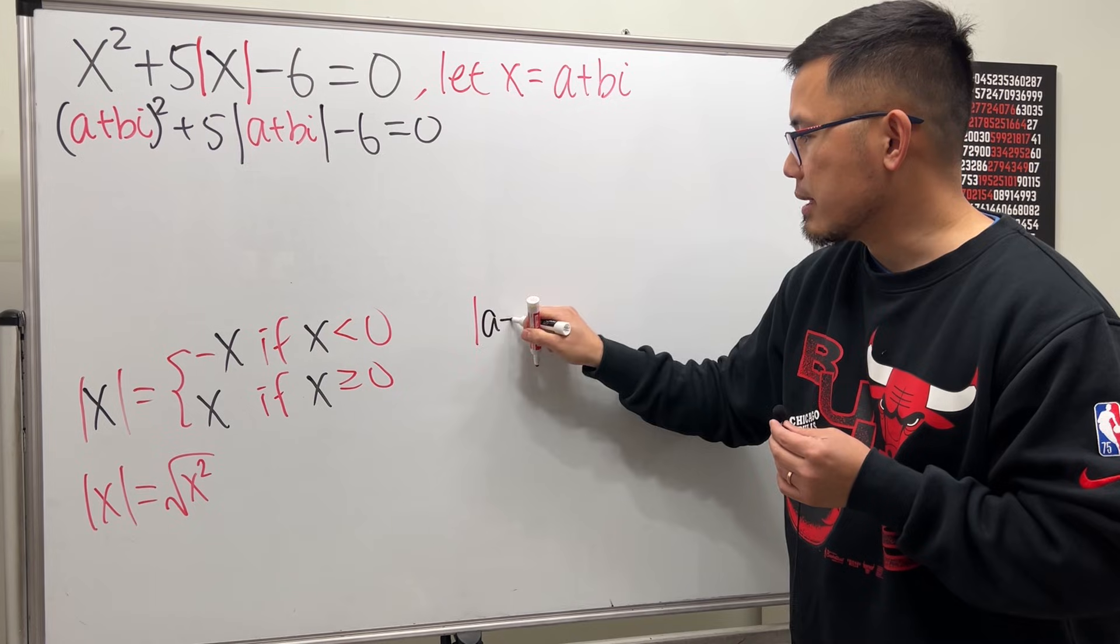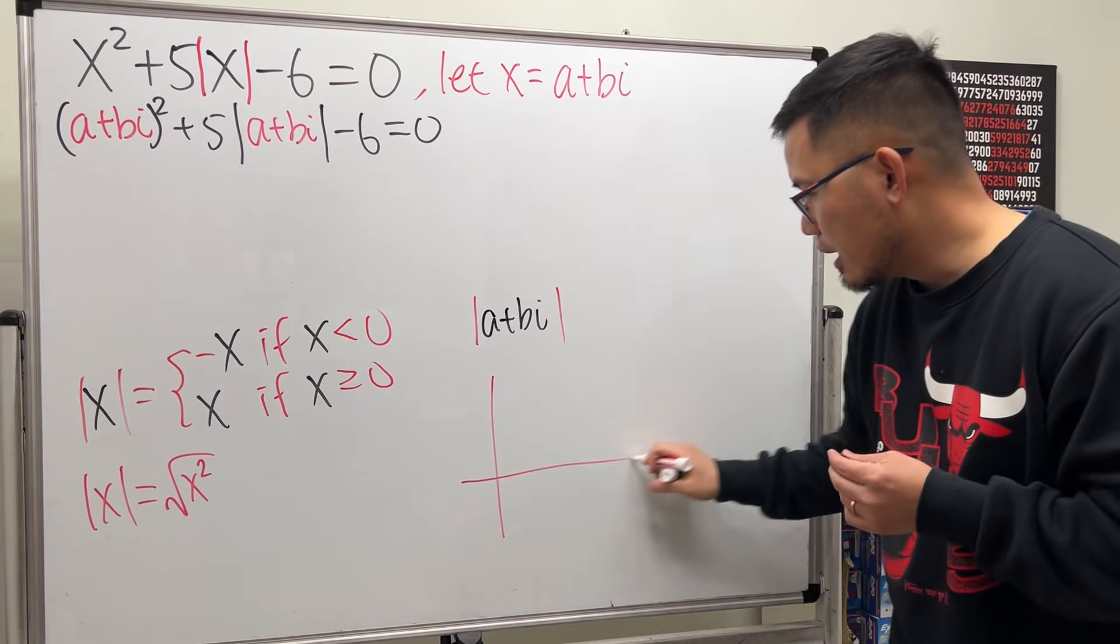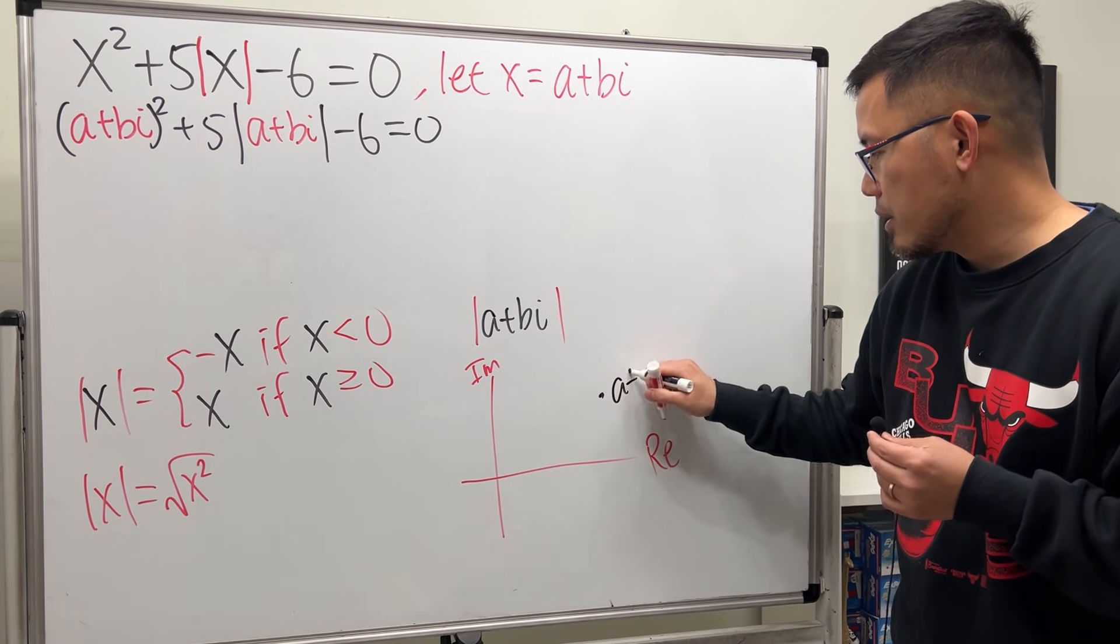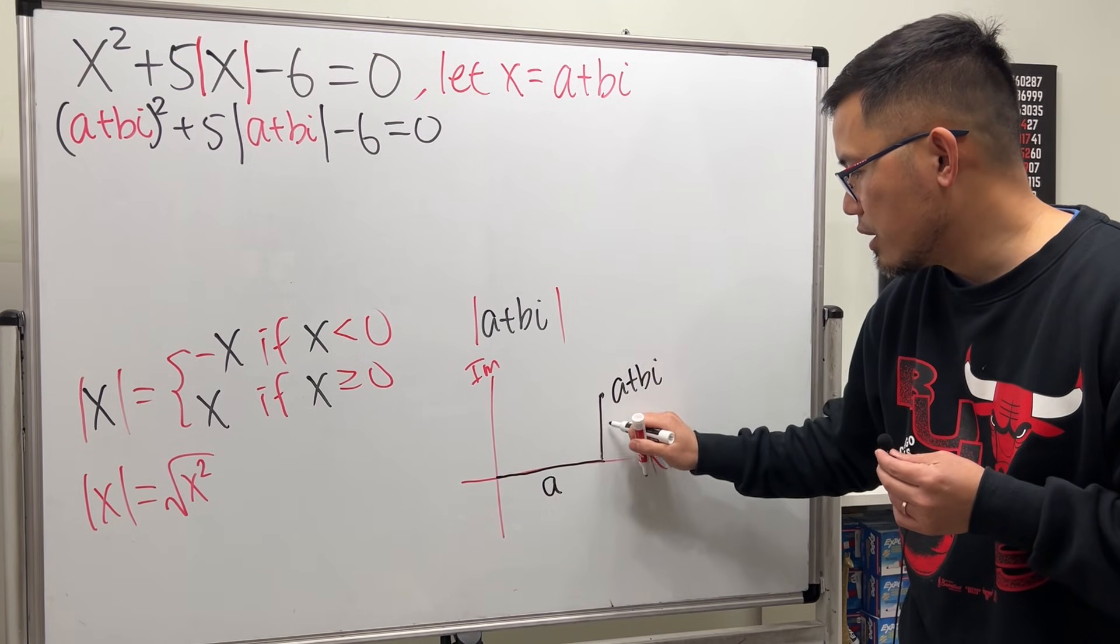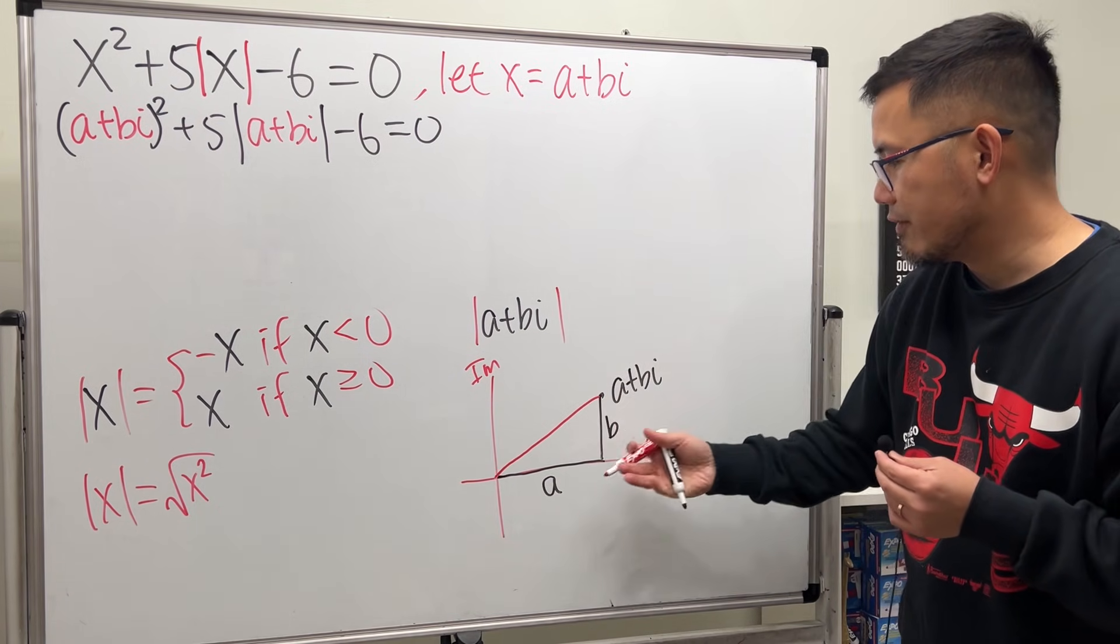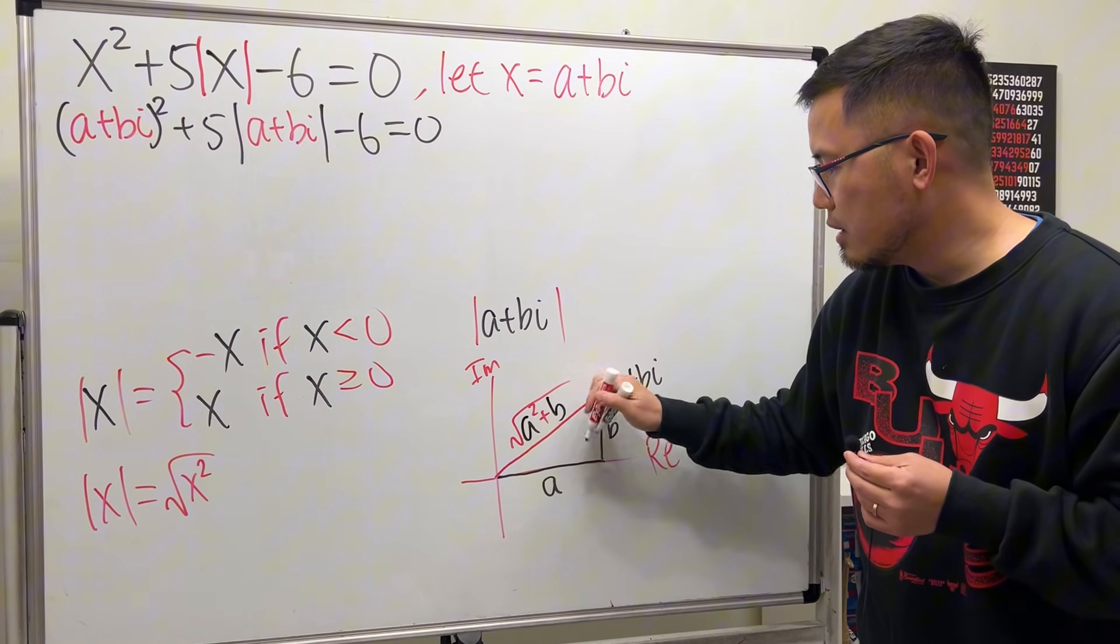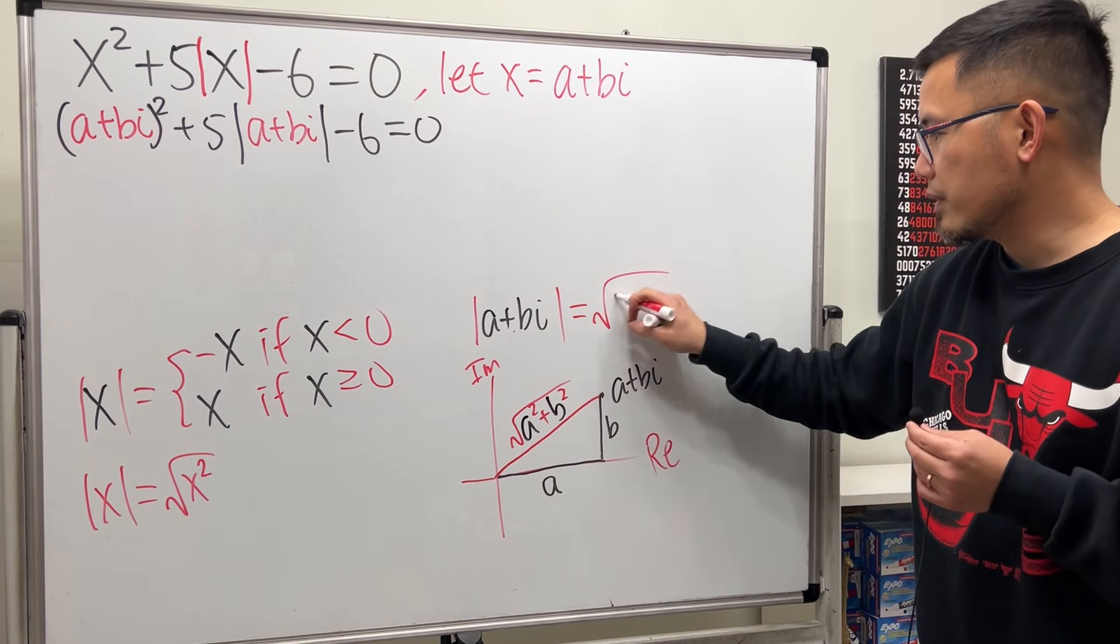When we have absolute value of a complex number, remember, absolute value measures the distance. So if you take a look on the complex plane, here's the real axis, here's the imaginary one. a plus bi, let's say, is somewhere here. Well, this means from here to here is a, and then from here to here, we have b. And to get the distance from the origin, as we can see, we have a right triangle. So the hypotenuse is square root of this square plus that square. So a squared plus b squared. And that's what is for the absolute value of that, square root of a squared plus b squared.